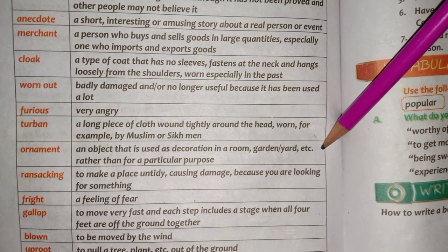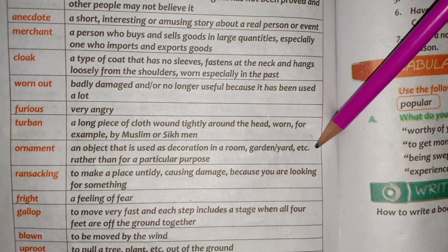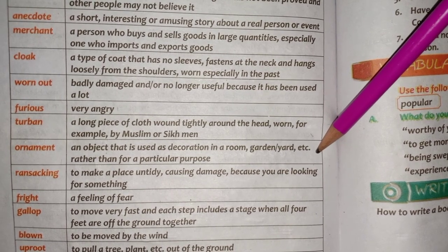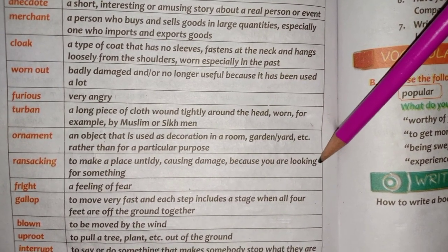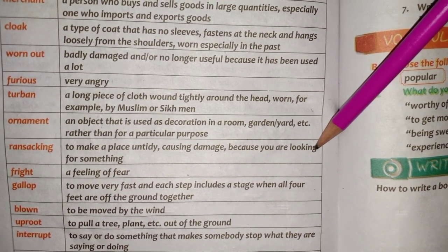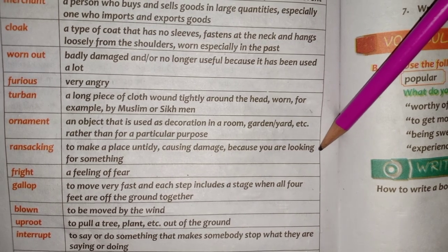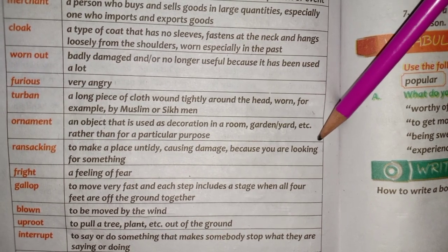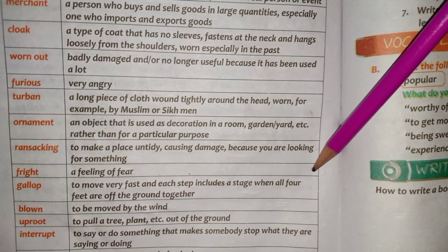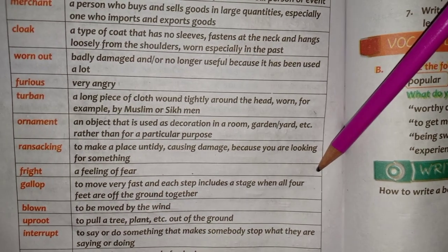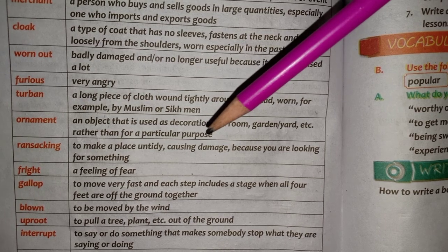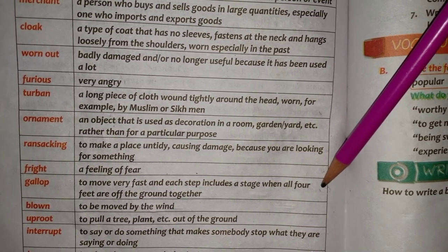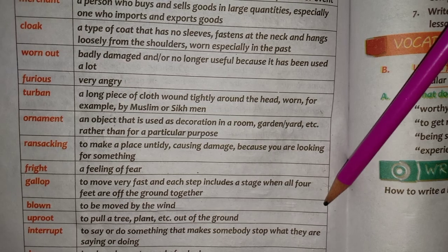Ornament (Zewer) — an object that is used as decoration in a room, garden or yard, rather than for a particular purpose; any object used for decorative purposes. Ransacking (Chhan marna, Talashi lena) — to make a place untidy, causing damage because you are looking for something. Fright (Darjana) — a feeling of fear. Gallop (Sarpat dhorna) — to move very fast where each step includes a stage when all four feet are off the ground together.